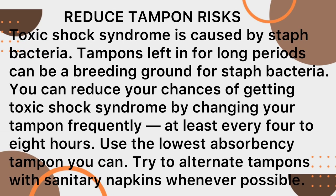Reduce tampon risk. Toxic shock syndrome is caused by staph bacteria. Tampons left in for long periods can be a breeding ground for staph bacteria. You can reduce your chances of getting toxic shock syndrome by changing your tampons frequently, at least every 4 to 8 hours. Use the lowest absorbency tampon you can, and try to alternate tampons with sanitary napkins whenever possible.